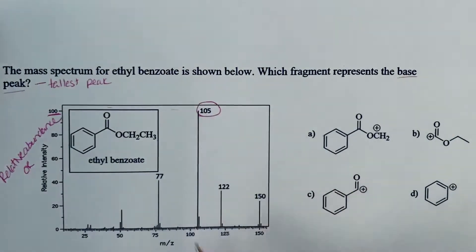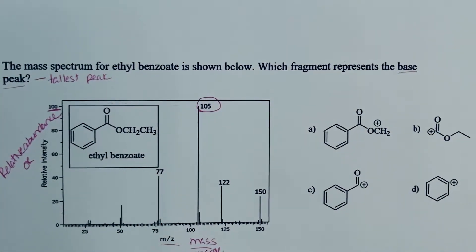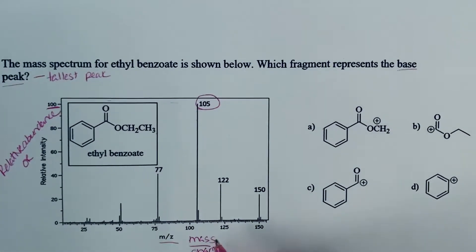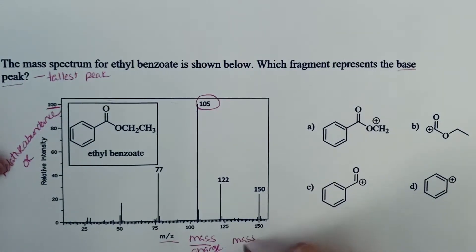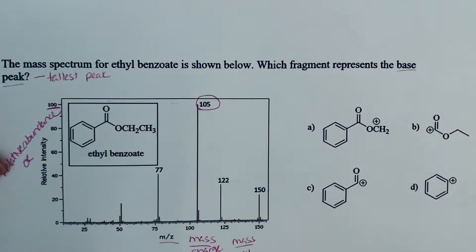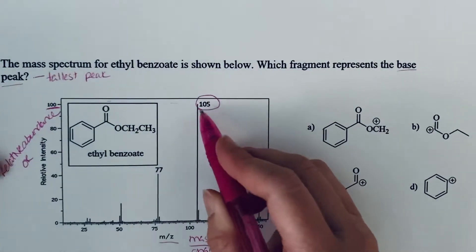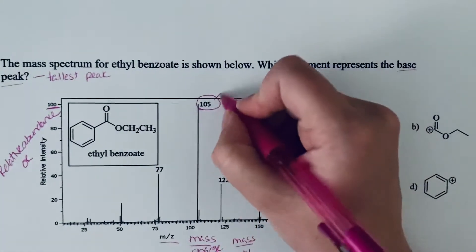105 is the mass to charge ratio. So m over z is your mass to charge ratio. And in the type of mass spectrometry that we are looking at, that charge is plus one, so it's your mass divided by one.